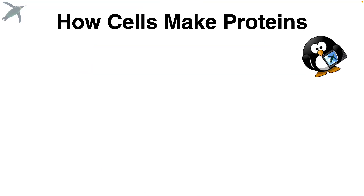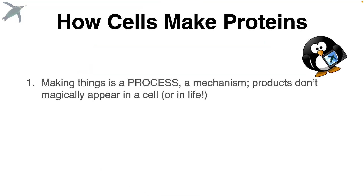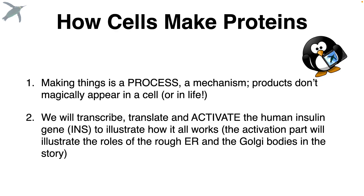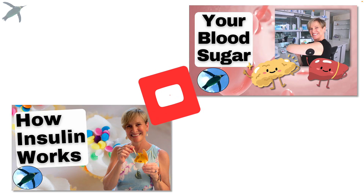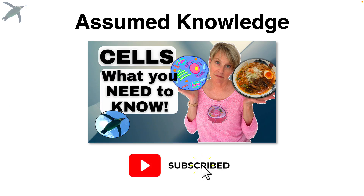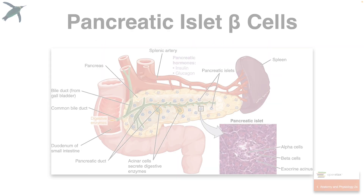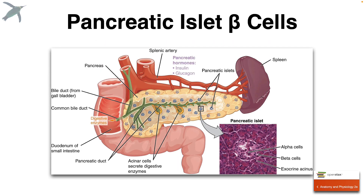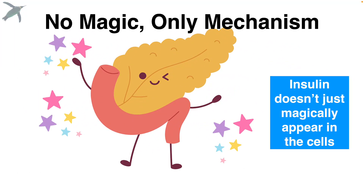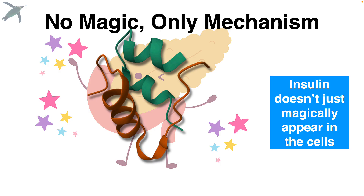I want to talk about transcription and translation today, but maybe not in the way you expect. I want to talk about the process of making stuff. Things don't just magically appear in cells, or in life actually. We are going to practice transcription and translation, and look at the activation of the human insulin gene to see how everything works. A theme here is no magic, only mechanism. Insulin doesn't just magically appear in the cells of the pancreas.